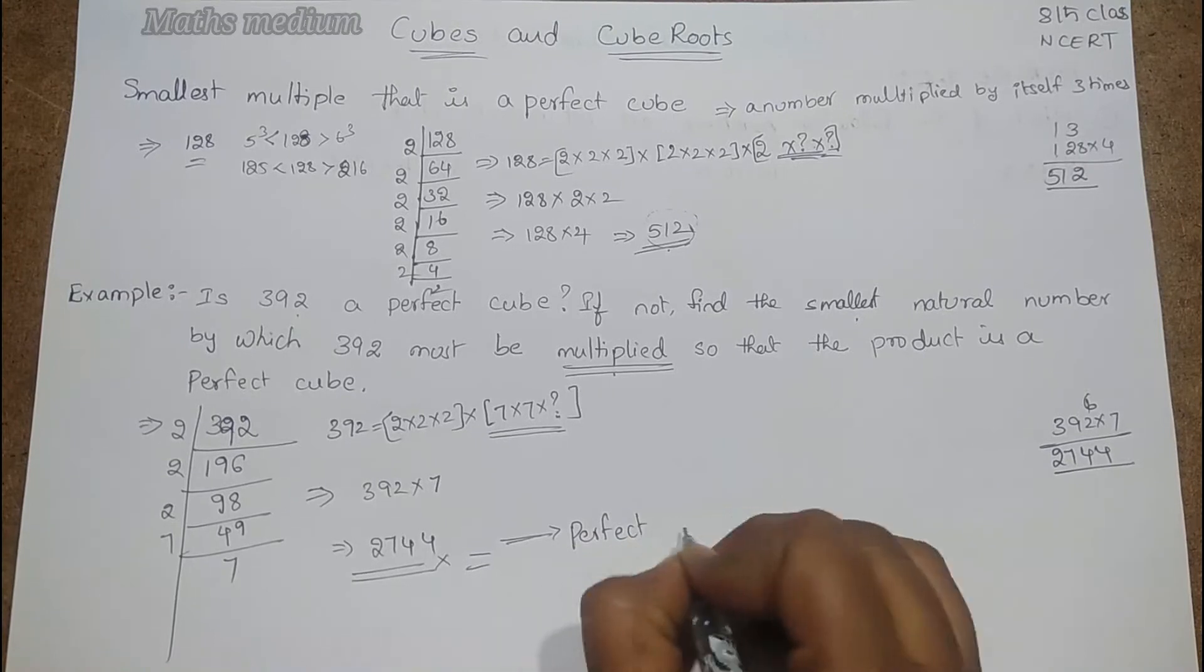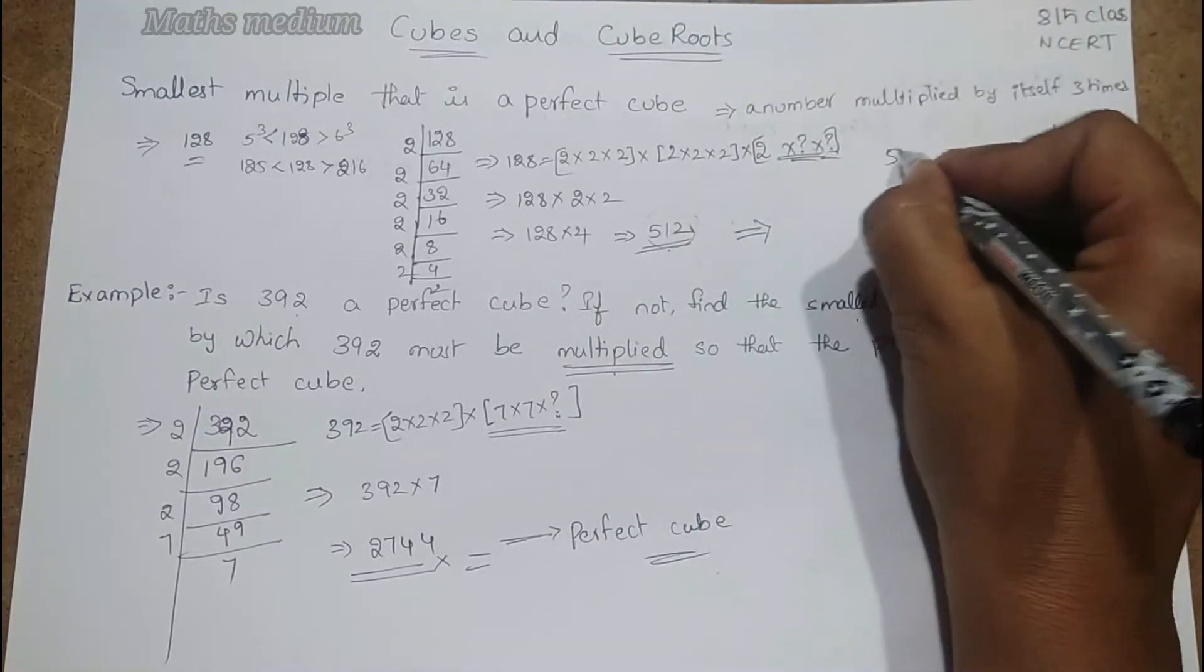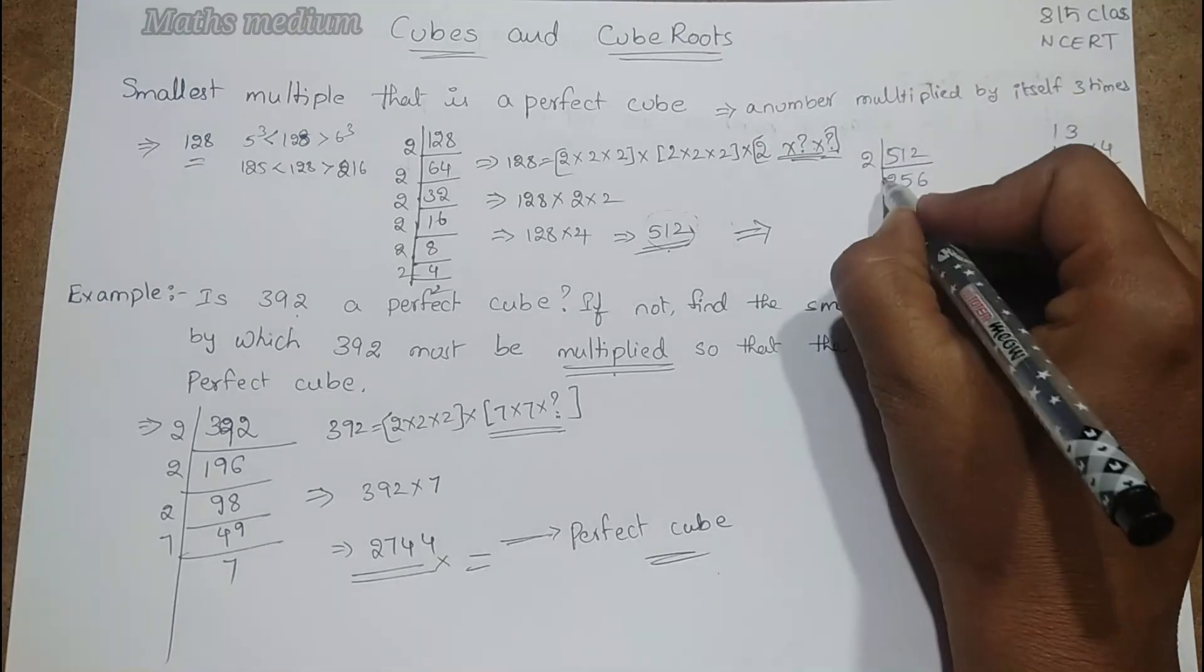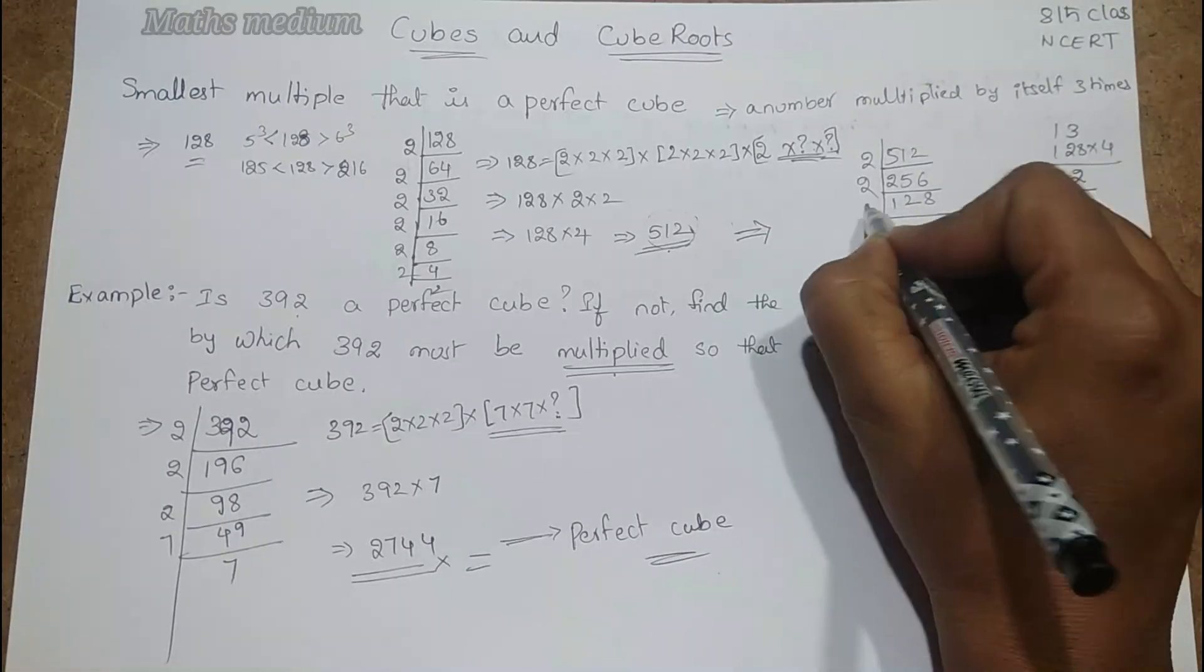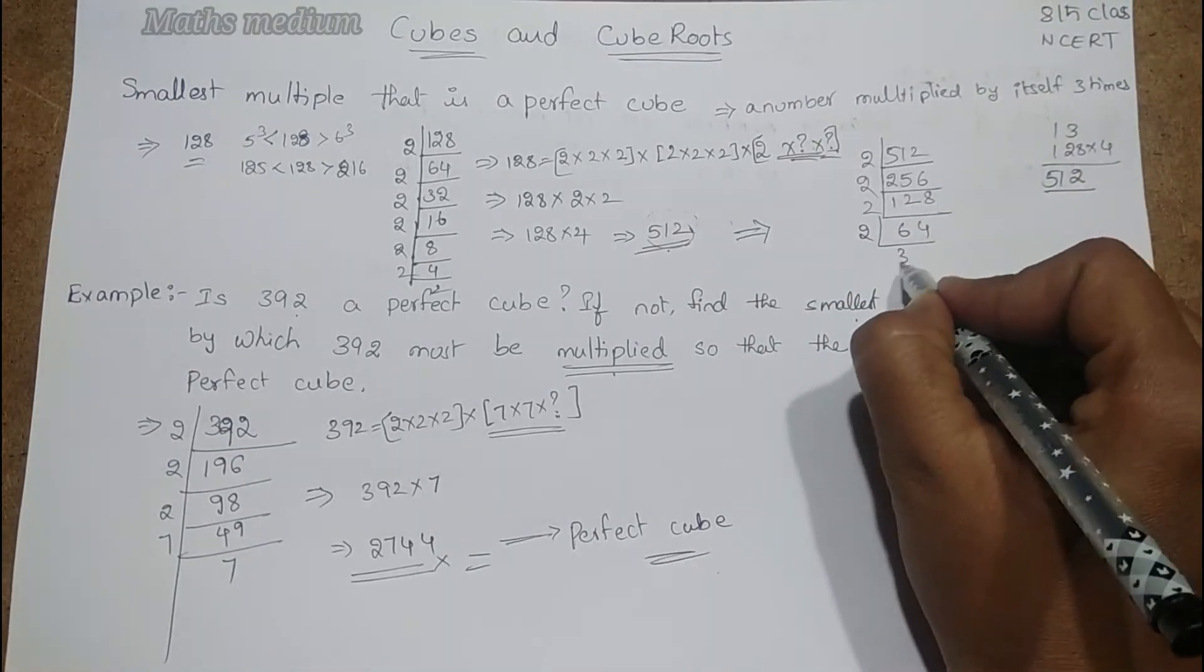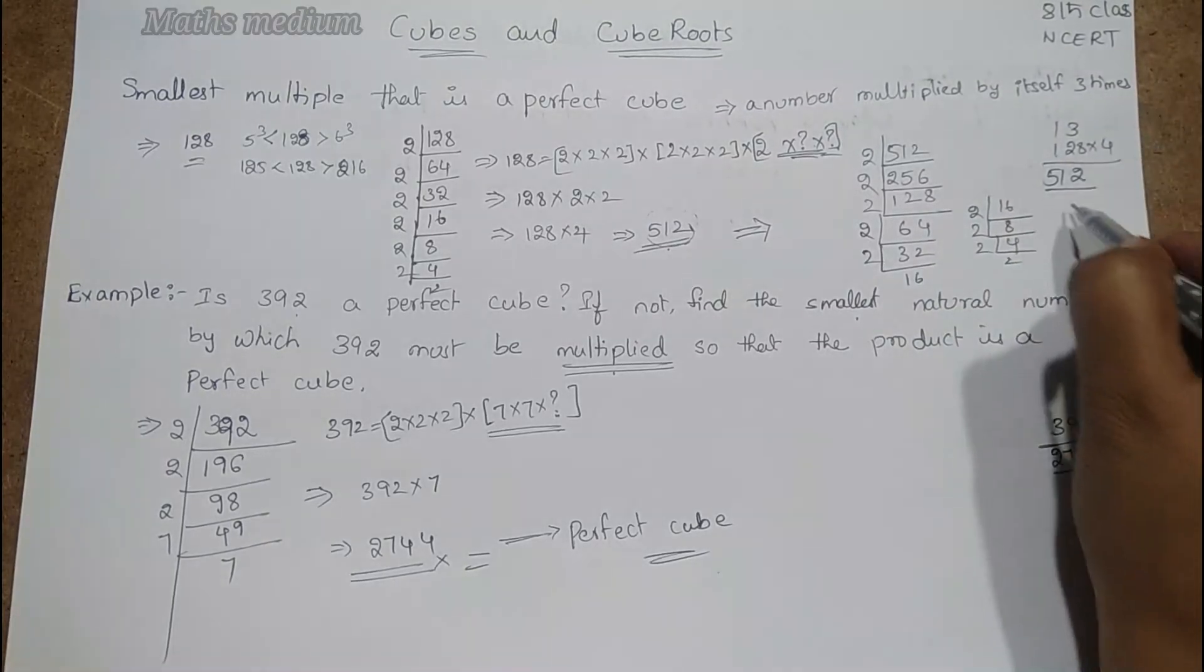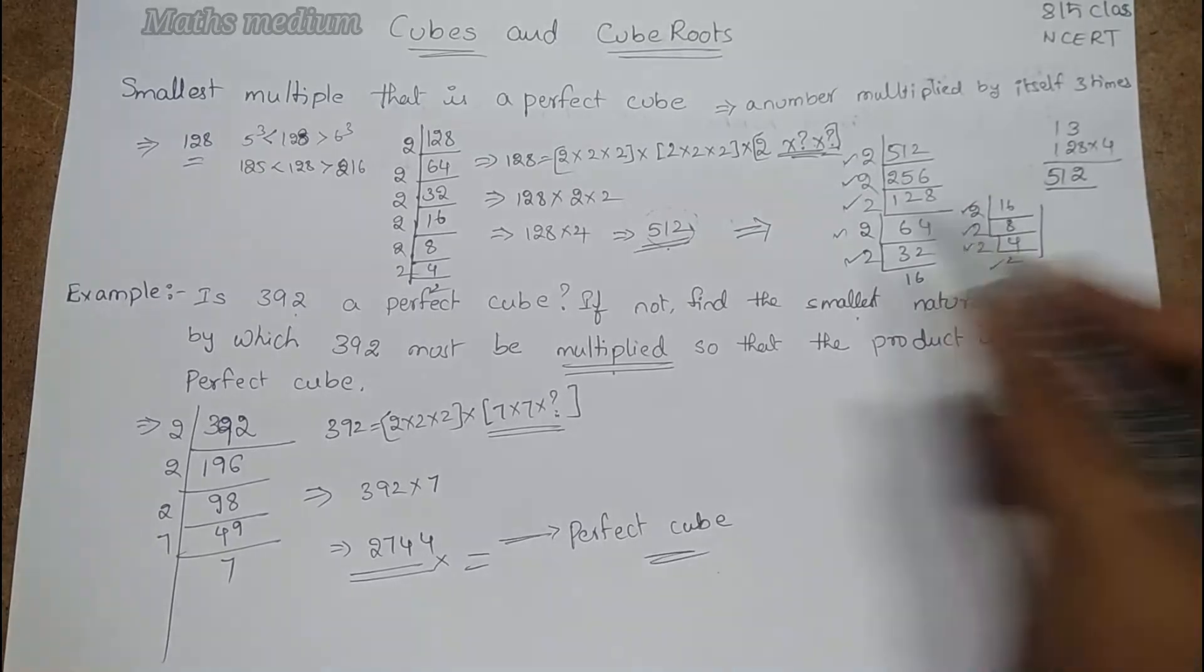If you want to check, I will explain here. 512: 2, 256; 2, 128; 2, 64; 2, 32; 2, 16; 2, 8; 2, 4; 2, 2; 1. If you take 1-2-3, again 1-2-3, again finally 1-2-3, so it is a perfect cube.